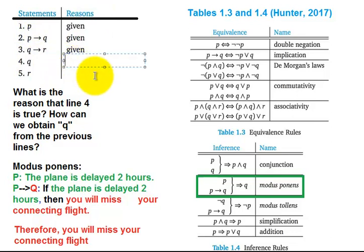So let's put that in right here. This is modus ponens. And I'm also going to make a note here that this is by 1 and 2, just so we know what lines we're using in the modus ponens inference.